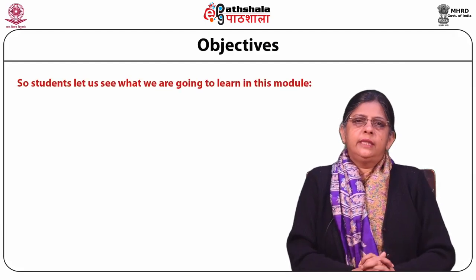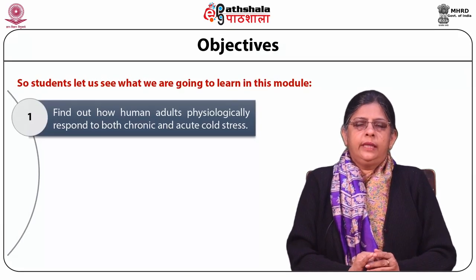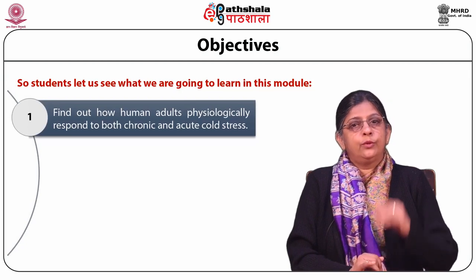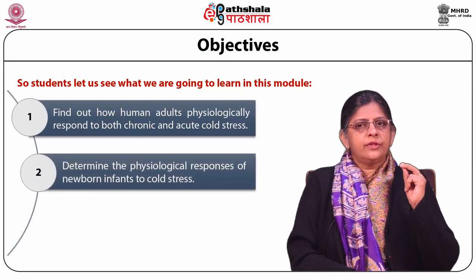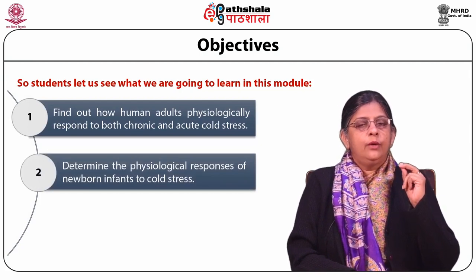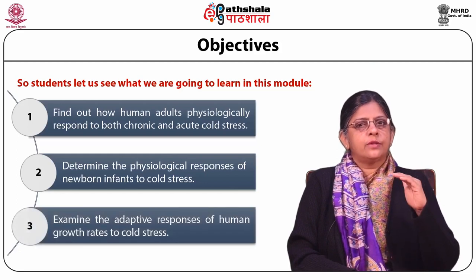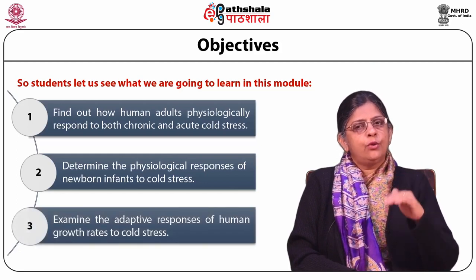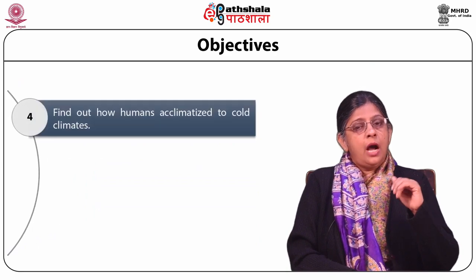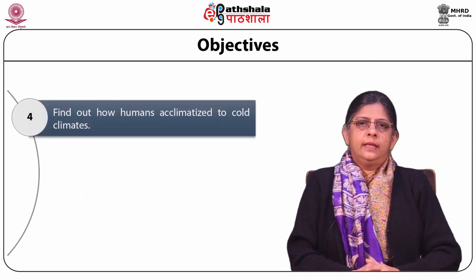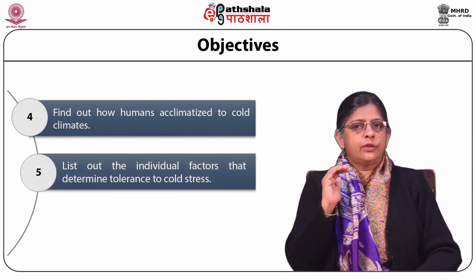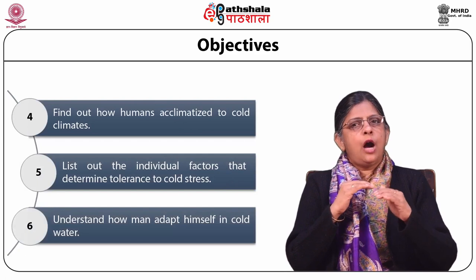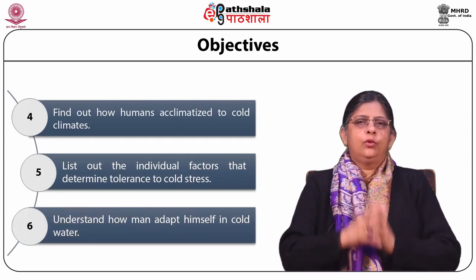In this module, we will find out how human adults physiologically respond to both chronic and acute cold stress. We will determine the physiological processes of newborn infants in cold stress, examine the adaptive responses of human growth rates to cold stress, find out how humans acclimatize to cold climates, list out individual factors that determine tolerance to cold stress, and understand how man adapts himself in cold water.